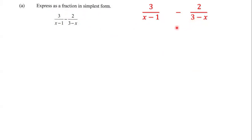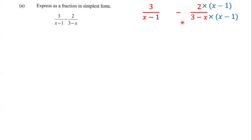But first, we must ensure that the denominators are the same. So we take 3 minus x and we multiply it by x minus 1. But whatever we do to the bottom, we must do to the top, so we have 2 times x minus 1. Similarly, we have x minus 1 and we're going to multiply it by 3 minus x. And whatever we do to the bottom, we must do to the top, so we have 3 minus x multiplied by 3.